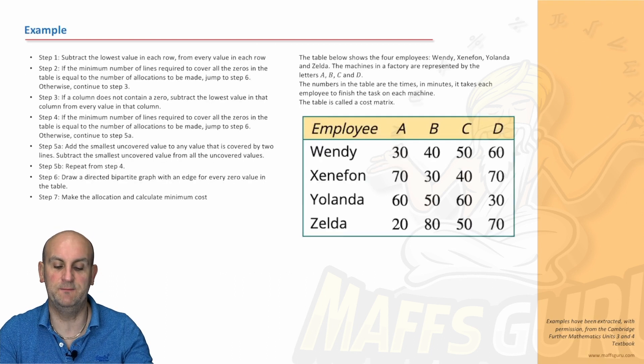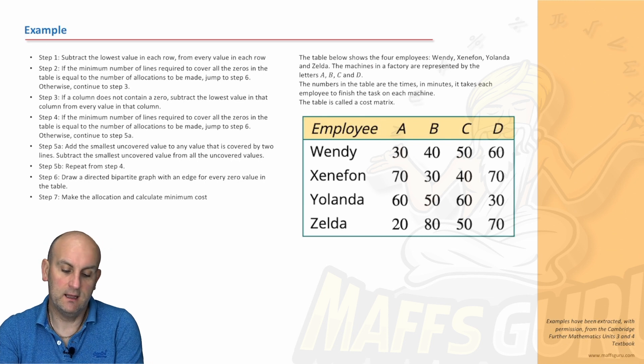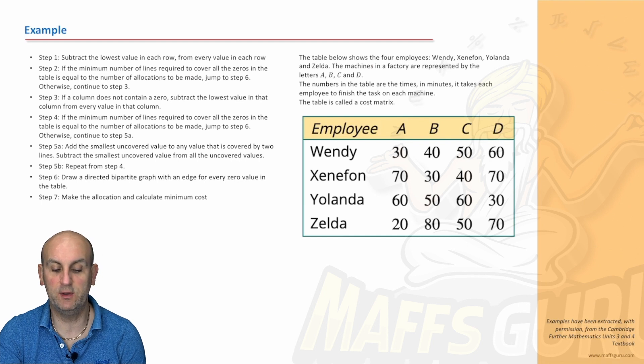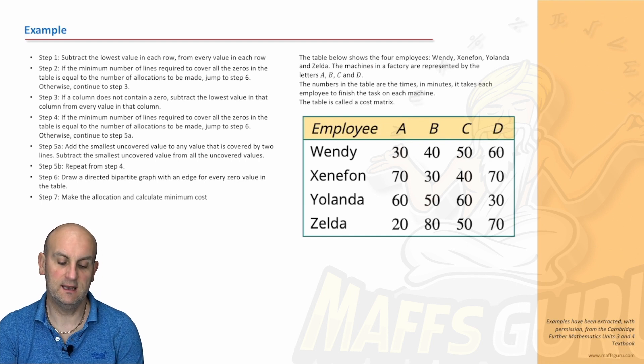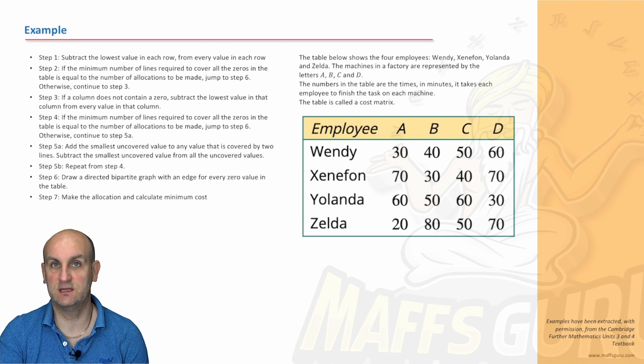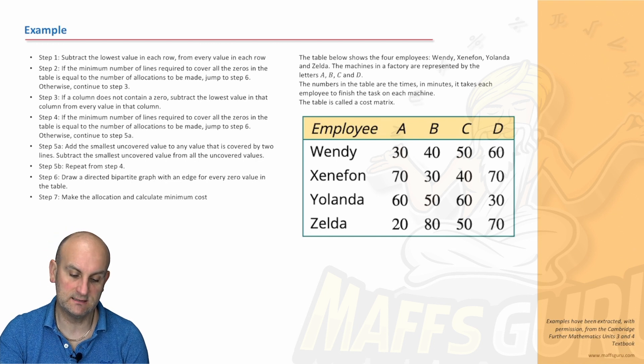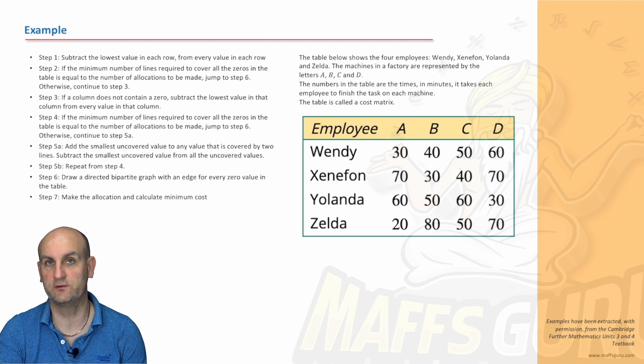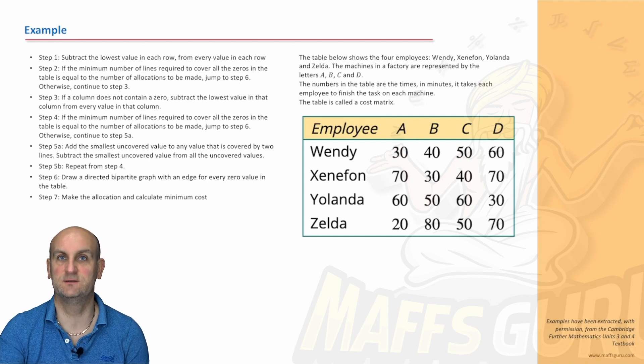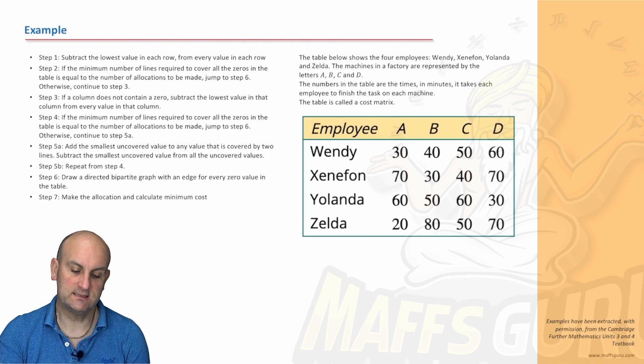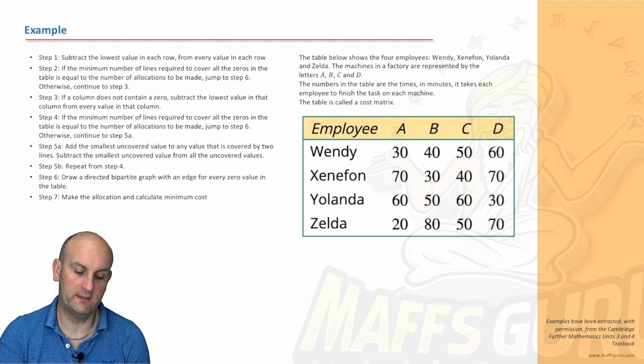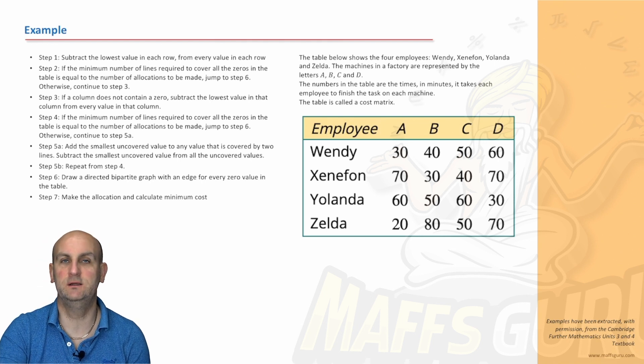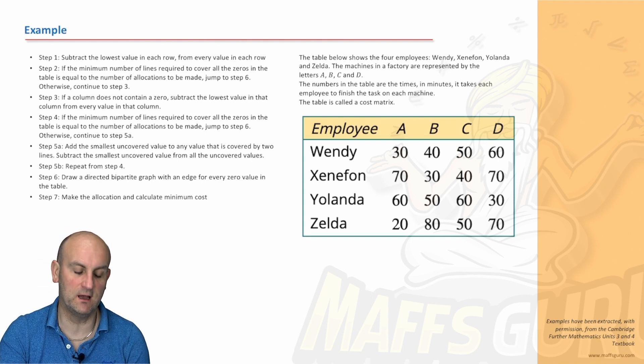So here we go. We've got some employees, A, B, C and D. Wendy. The table shows four employees, Wendy and the machines in a factory. So the employees were Wendy, Xenophon, Yolanda and Zelda. And the machines they can operate is A, B, C and D. So what are the numbers? The numbers in the table, the time in minutes it takes each employee to finish a task. So those are the weighted sections of the graph. Question says the table is called a cost matrix. What it wants us to do is try and basically work out which employee is best to use which machine. And the way we use that is the Hungarian algorithm.